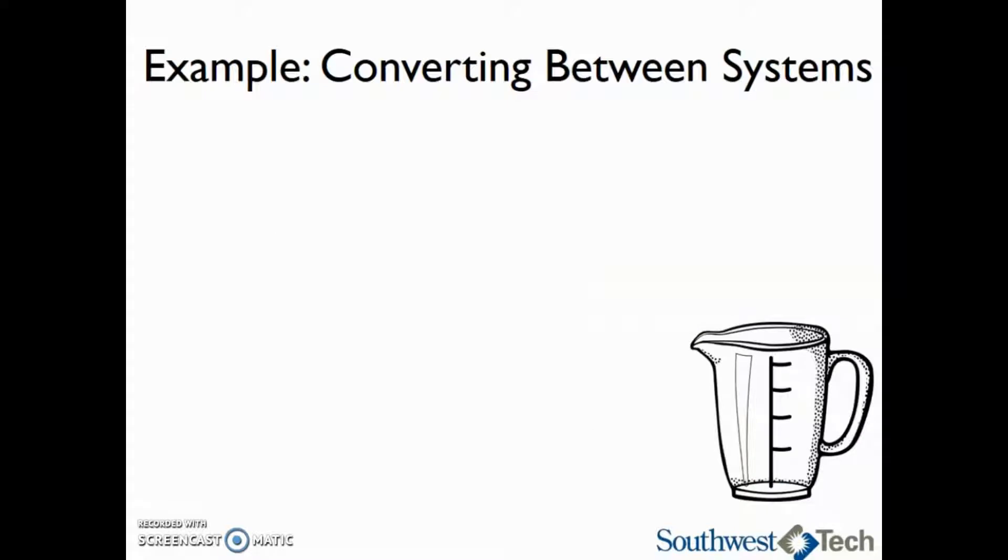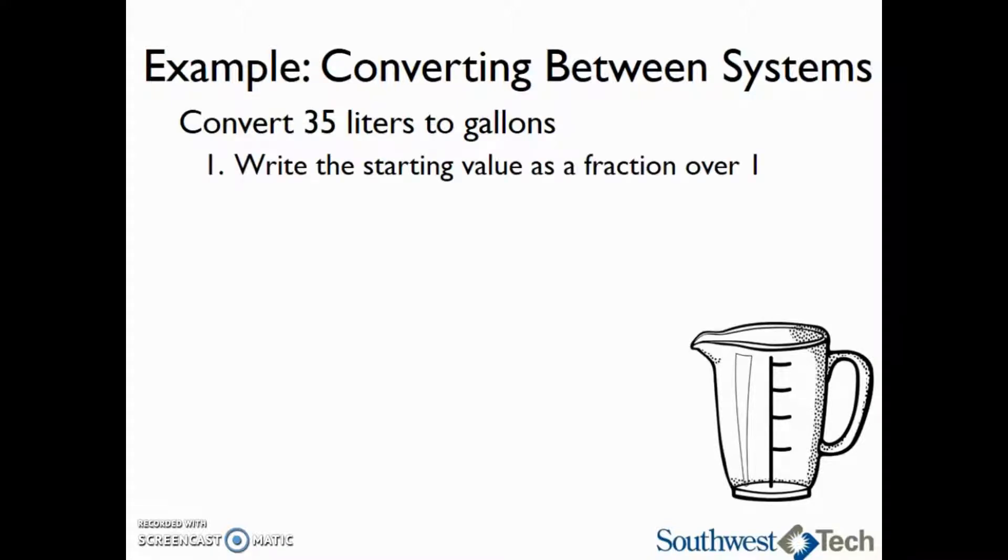So let's take a look at an example converting between systems. Let's say that we want to convert 35 liters to gallons. So in this process, the very first thing that we want to do is write our starting value as a fraction over 1. So we want to convert 35 liters, so we're going to write 35 liters as a fraction over 1.